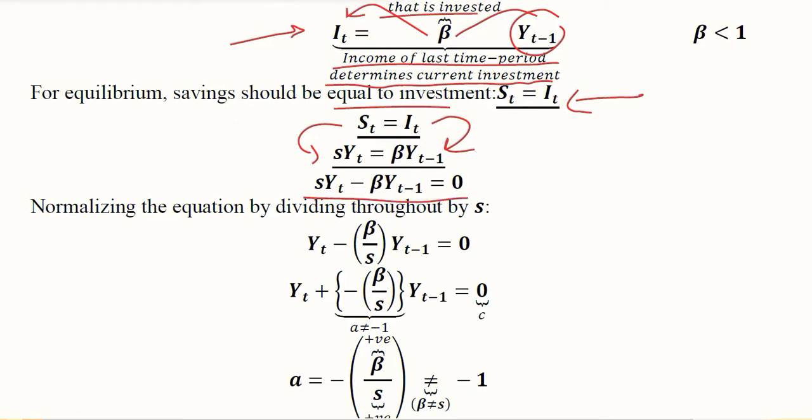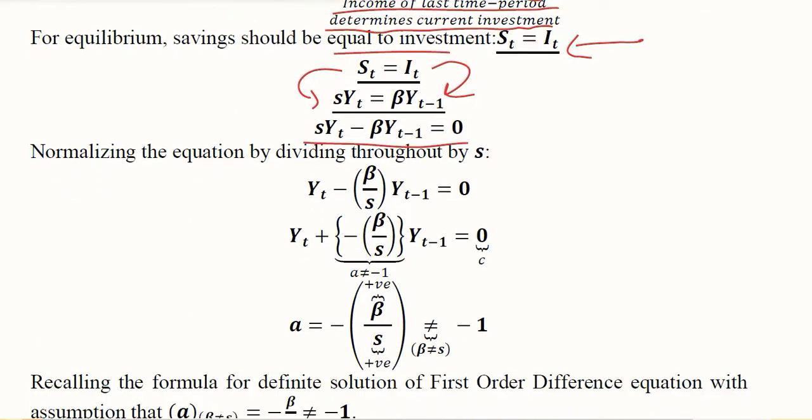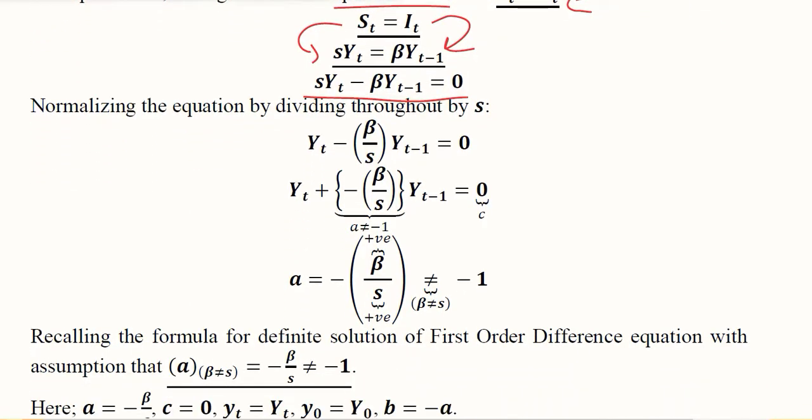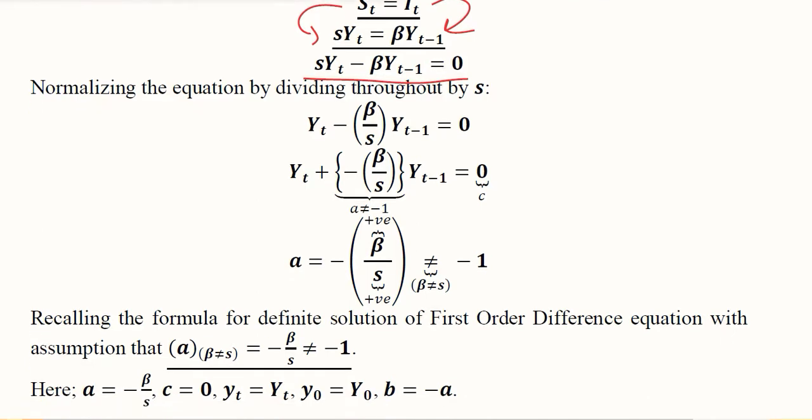We can rearrange them to look like this, which is quite similar to the first order difference equation in its standard form. However, s is something unwanted, so we have to divide it to normalize the given form. When we divide it by s, we get this expression.